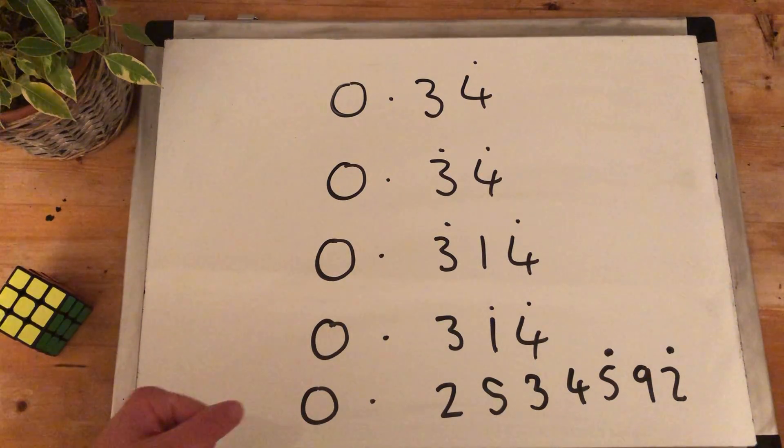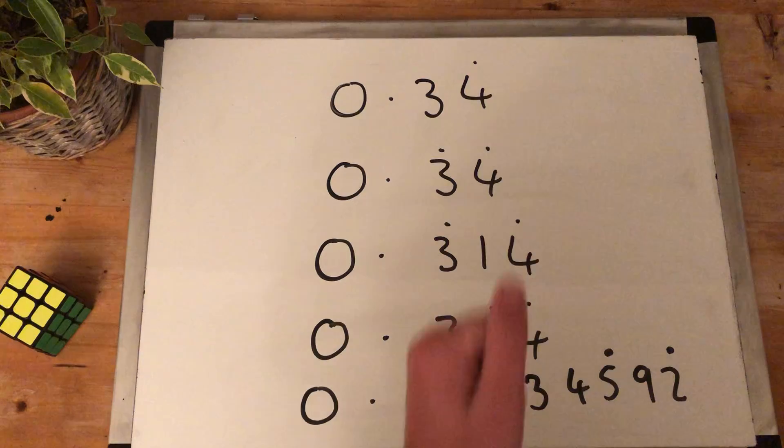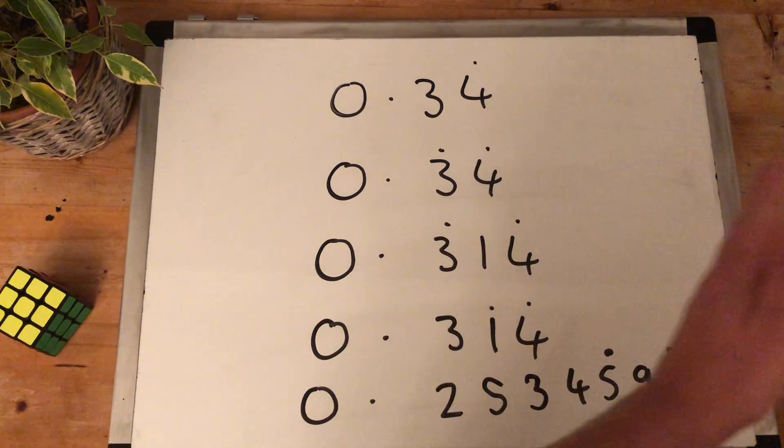0.34 where the recurring symbol is above the 3 and it's above the 4. So it's 0.34343434 forever.